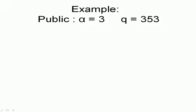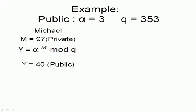The alpha and Q are selected, for example, alpha equals 3 and Q equals 353. These are made public. Now, Michael selects his own private key M, say 97. Then he calculates using this formula. After calculations, we'll find out Y is equal to 40. He makes that public.